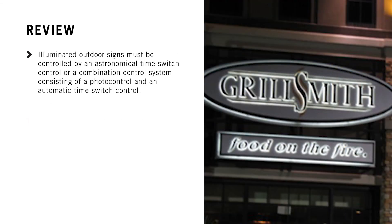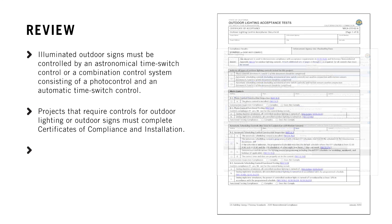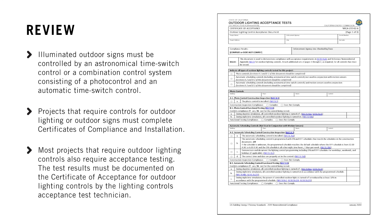Illuminated outdoor signs must be controlled by an astronomical time switch control, or a combination control system consisting of a photo control and an automatic time switch control. To demonstrate compliance with the Energy Code, projects that require controls for outdoor lighting or outdoor signs must complete certificates of compliance and installation. Most projects that require outdoor lighting controls also require acceptance testing, and the test results must be documented on the certificate of acceptance for outdoor lighting controls by the acceptance test technician.